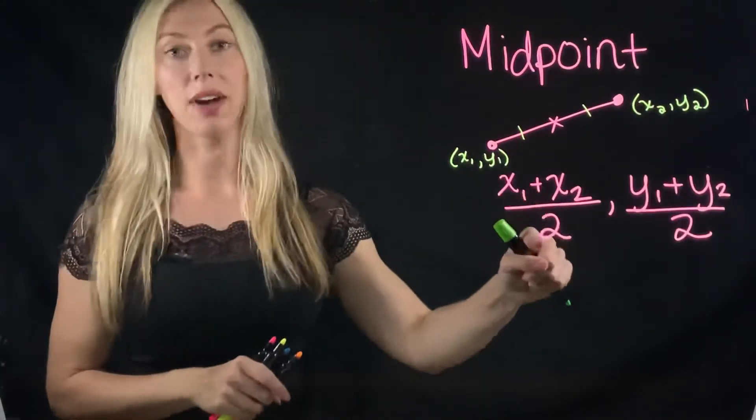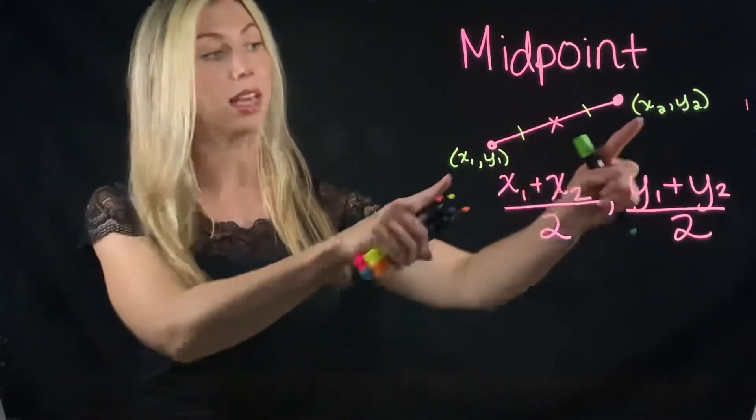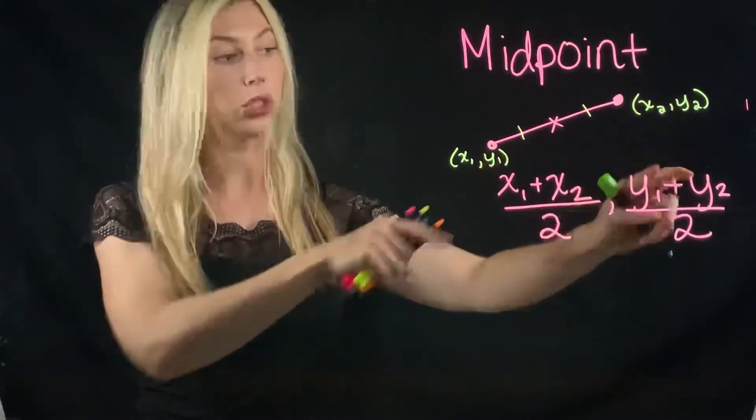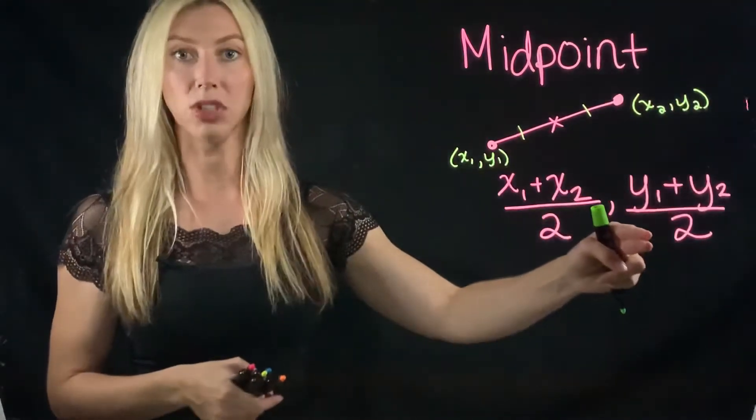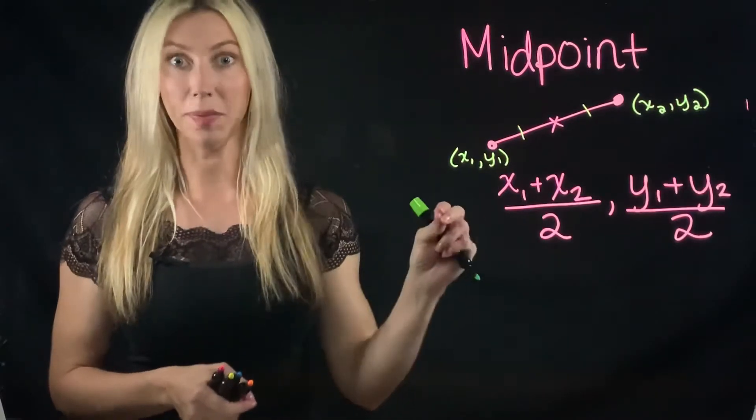So you're going to add them together and divide by two and then you're going to do the same thing for the y's. You're going to add the two y's together and then divide by two and that will give you the point exactly in the middle.